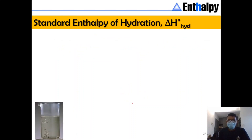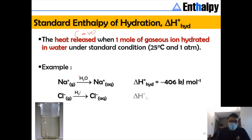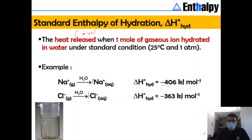The standard enthalpy of hydration is the heat released — referring to a negative value — when one mole of a gaseous ion is hydrated in water under standard conditions. For example, Na⁺(g) hydrated in water forms Na⁺(aq). It must be one mole, and the process gives a negative enthalpy value because heat is released to the surroundings.